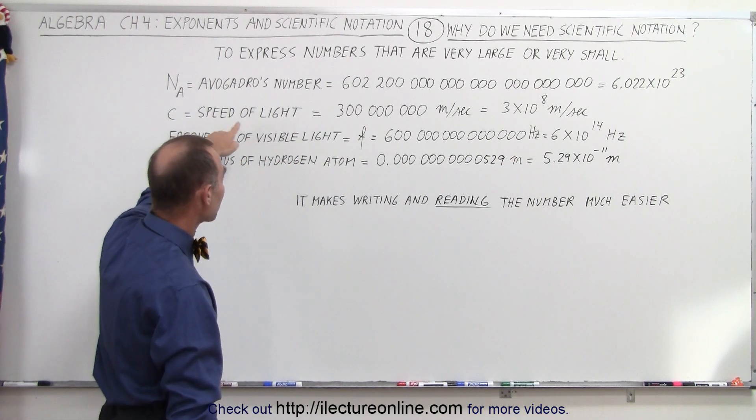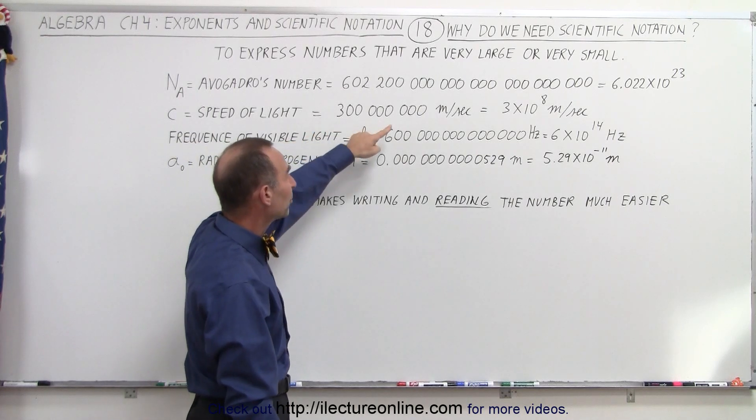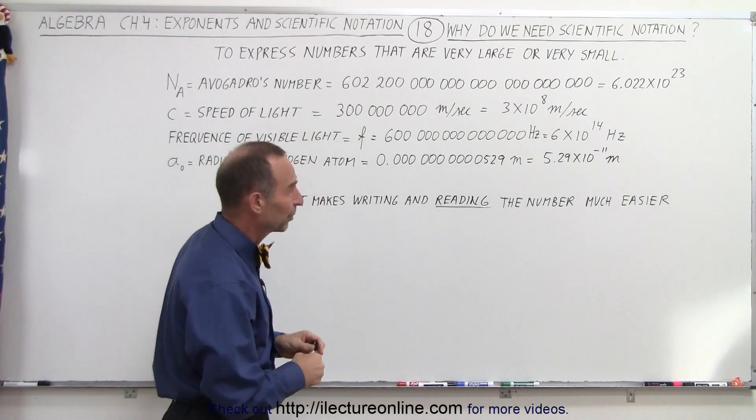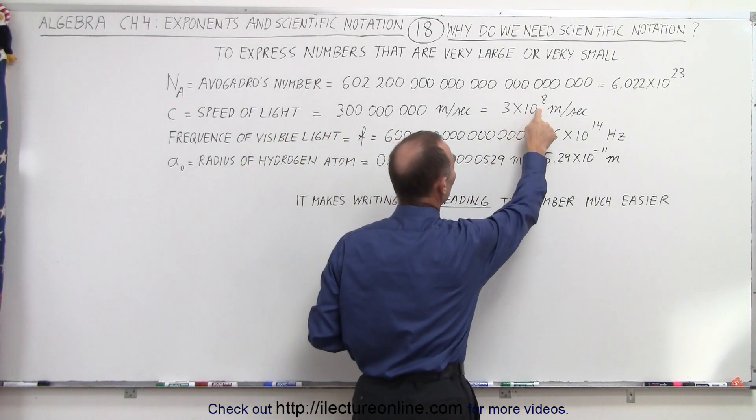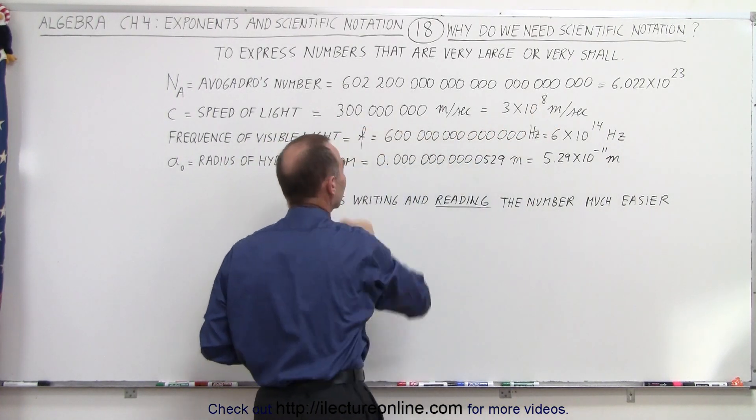Or, for example, the speed of light, which is 300 million meters per second, approximately. We can much easier write it as 3 times 10 to the 8, where 10 to the 8 represents all the zeros behind the 3.